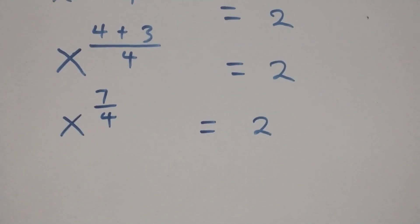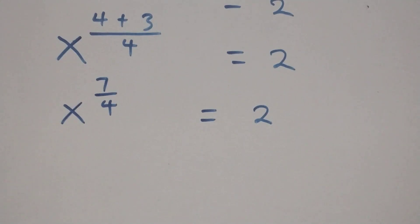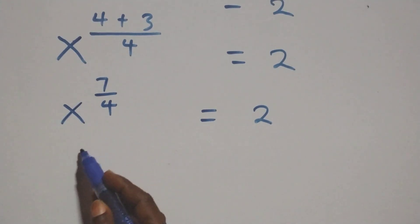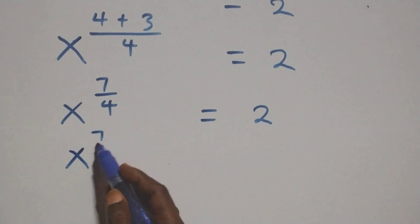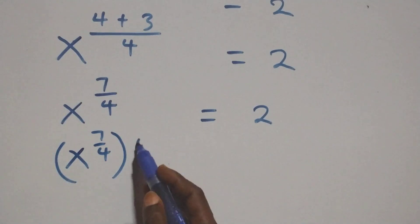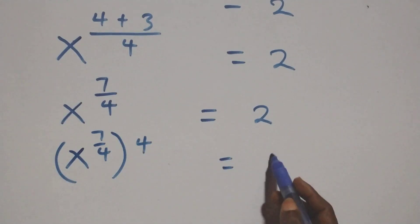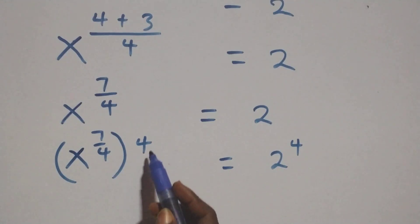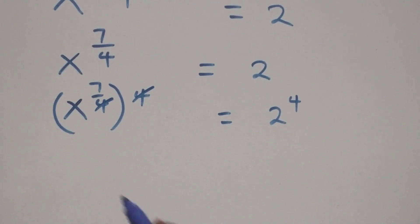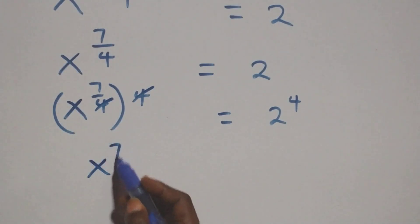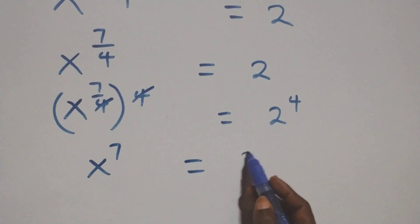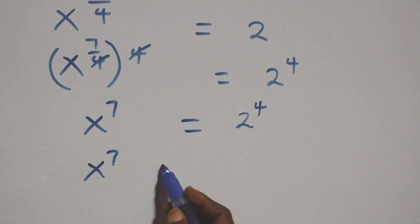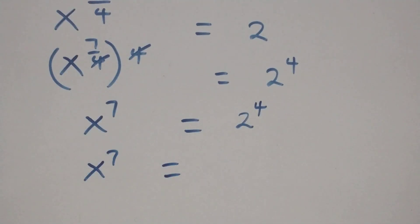We can multiply both sides' exponent by 4. We raise this side to power 4: x raised to power 7 over 4, raised to power 4, equals 2 raised to power 4. The 4s cancel each other, and we have x raised to power 7 equals to 2 raised to power 4, which is 16.